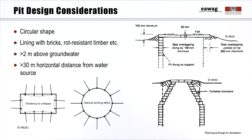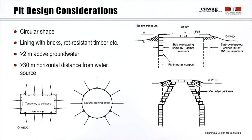Especially if the pit is to be reused, its walls should be lined. This prevents the pit from collapsing during emptying. Pit lining materials can include brick, rot-resistant timber, concrete or stones. The lining of the upper edge of the pit can be built in the so-called corbelled brickwork technique as shown here. This design allows the use of a smaller diameter slab and can save some costs.